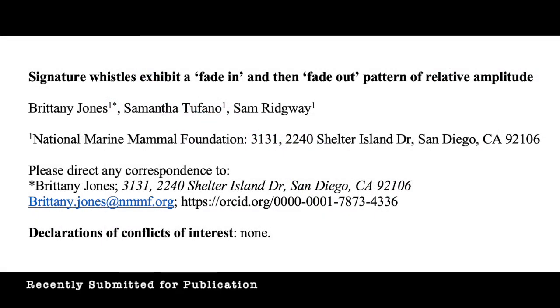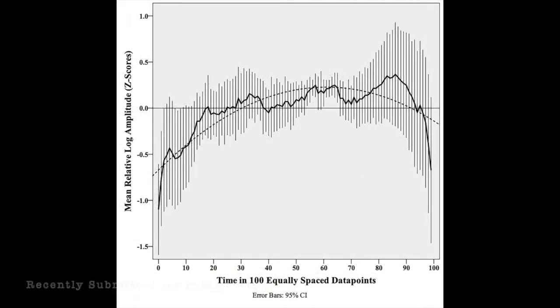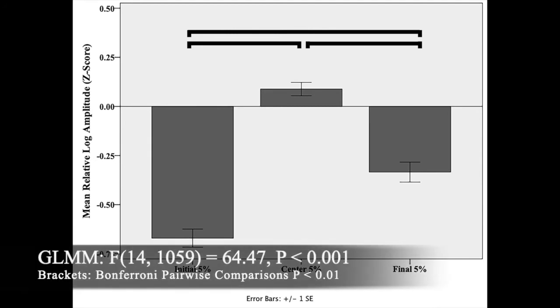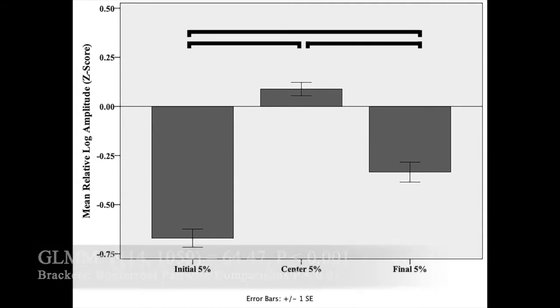Our final model also included a significant quadratic effect of time. This figure depicts the mean relative log amplitude over a standardized time axis for all of the dolphin whistles. This is essentially showing a fade-in and then fade-out pattern of relative amplitude over time. Further confirming this pattern, we found that the first 5% of the contour had significantly less energy than the center or final 5%, and that the final 5% had significantly less energy than the center 5%. This also depicts that fade-in and fade-out pattern.